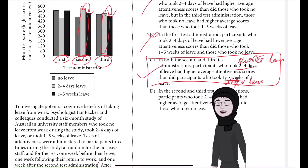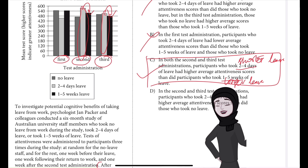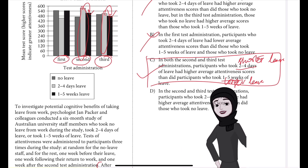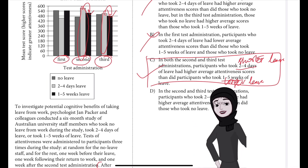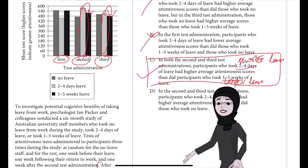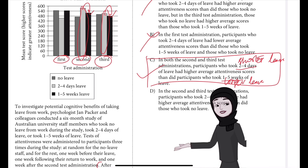One week after the return to work, participants who took only two to four days of leave had an average attentiveness score between 540 and 600, while participants who took one to five weeks of leave had an average score between 480 and 540. At two weeks after the return to work, those who took only two to four days of leave had an average score between 480 and 540, while those who took one to five weeks of leave had a score of approximately 480. So on both post-leave testing dates, participants with longer leave times had lower average attentiveness scores than those with shorter leave times, confirming Packer and colleagues' conclusion.